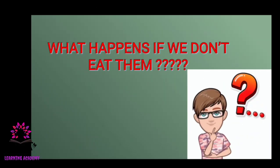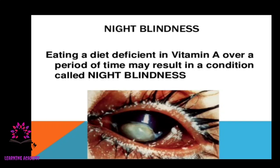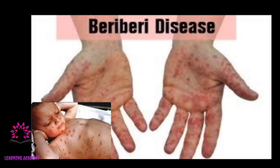What happens if we don't take vitamins? We get different diseases. Without vitamin A, you get night blindness — you cannot see in dim light. Without vitamin B, it causes beriberi, with symptoms including accumulation of water in the legs, muscle pain, and respiration and heart problems.